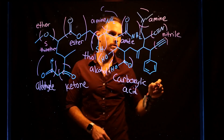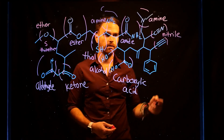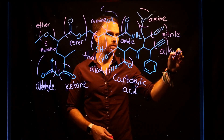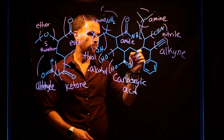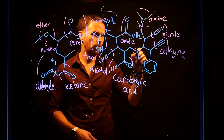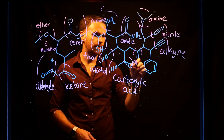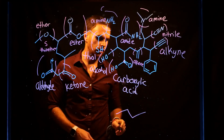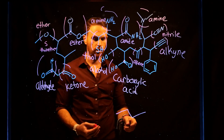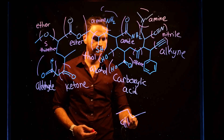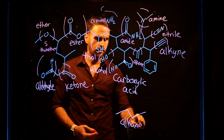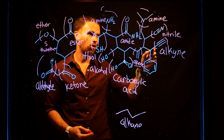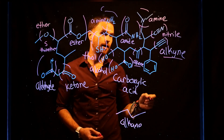A carbon with a triple bond to nitrogen is called a nitrile group. Next to it, a carbon triple-bonded to another carbon is called an alkyne. A carbon double-bonded to another carbon is called an alkene. And a simple hydrocarbon chain with no double or triple bonds is called an alkane.